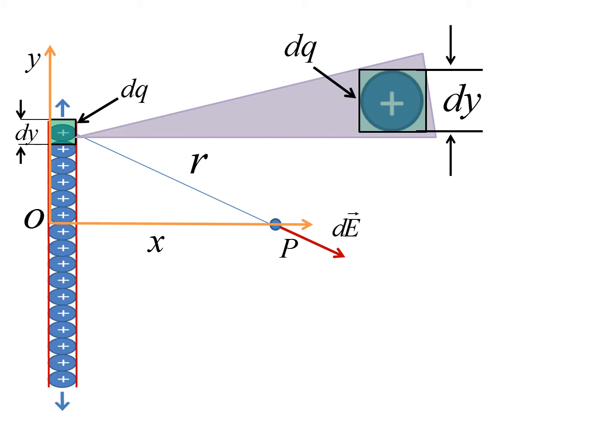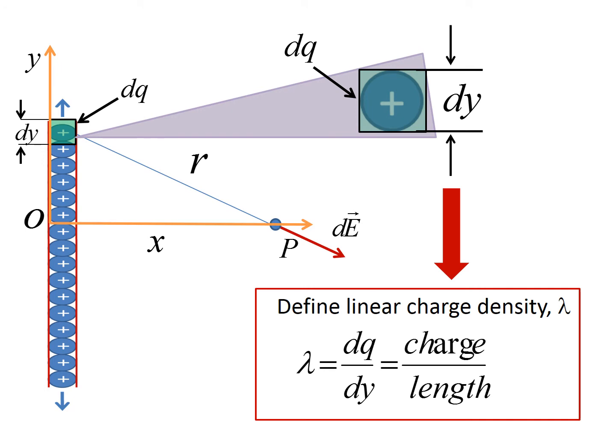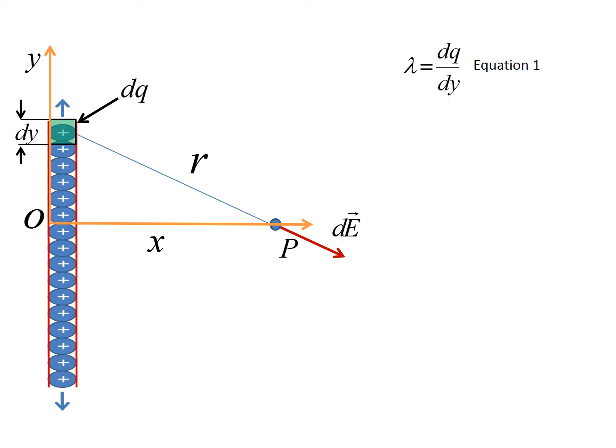If we blow up section dY and look at it more closely, we see that section of wire contains only charge dQ. Any section of wire with length dY has exactly the same dQ because the wire is uniformly charged. So we define linear charge density lambda as a constant — charge per unit length, in coulombs per meter. That gives us equation one: lambda equals dQ divided by dY.